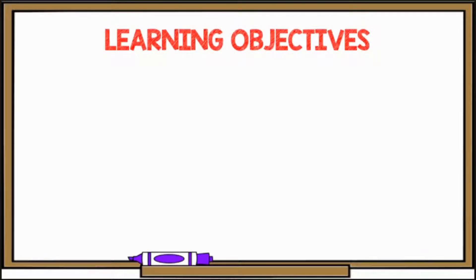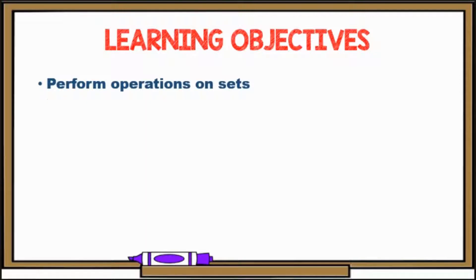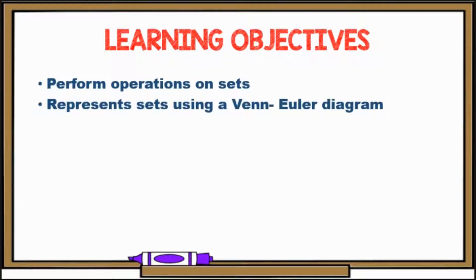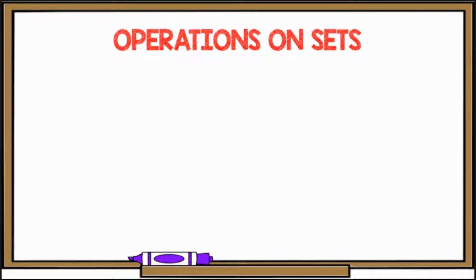For today's learning objectives, at the end of the lesson, you are expected to learn how to perform operations on sets and represent sets using the Venn-Euler diagram. Under operations on sets, we have four.